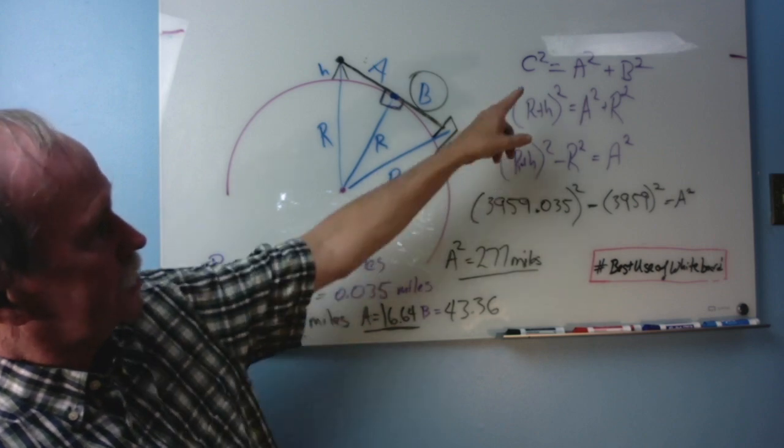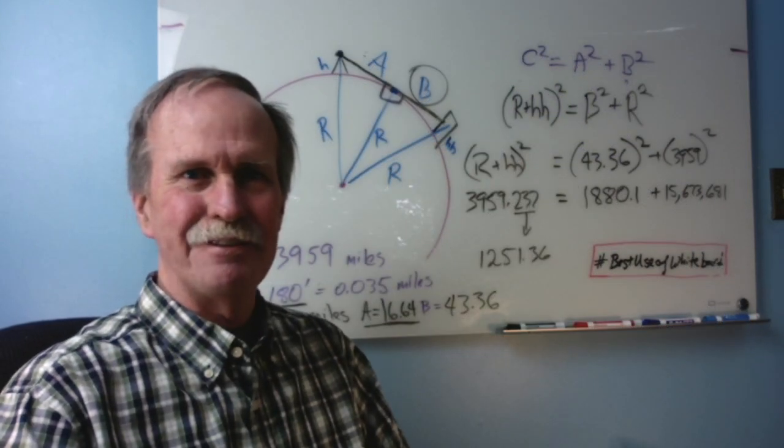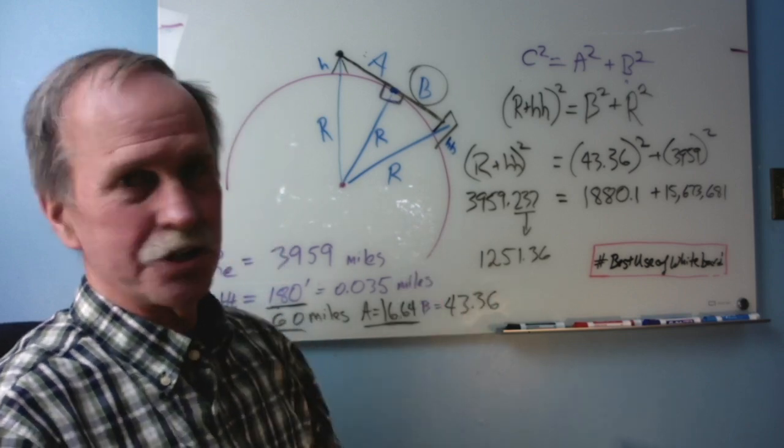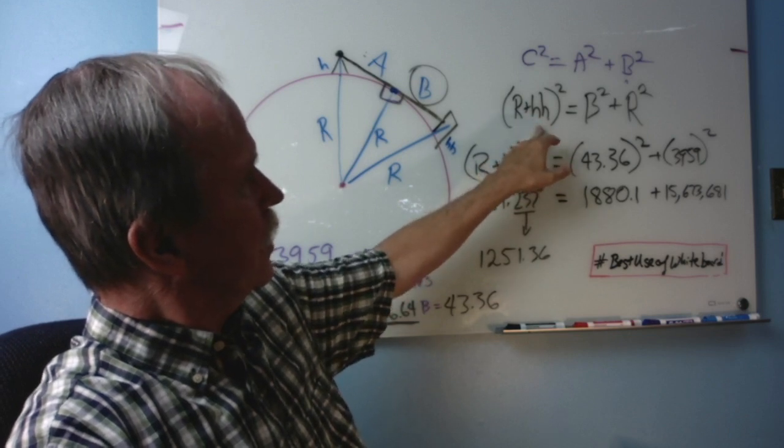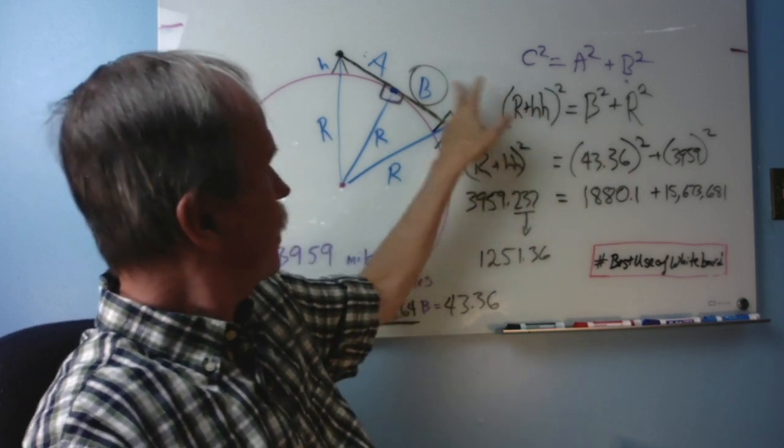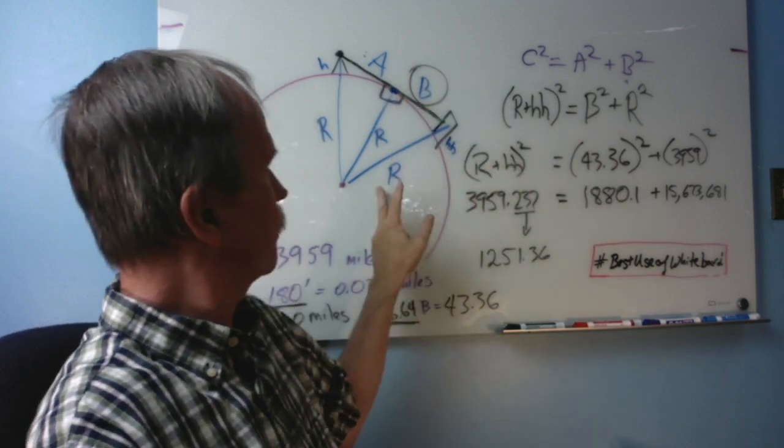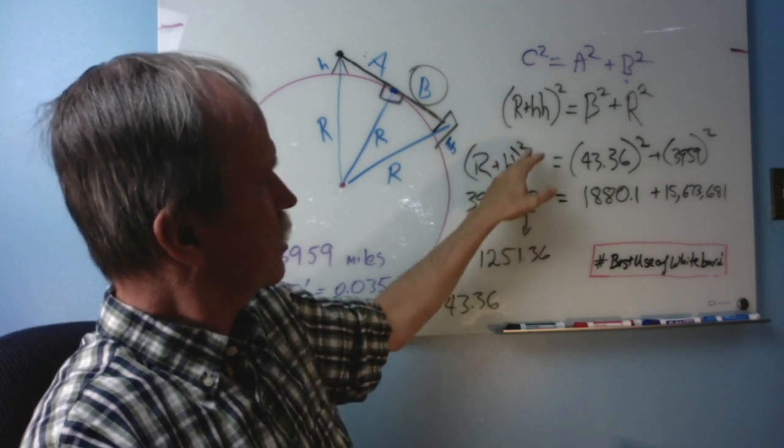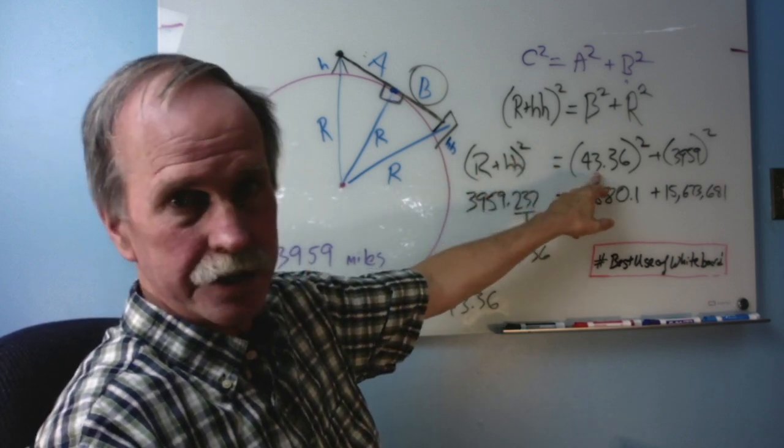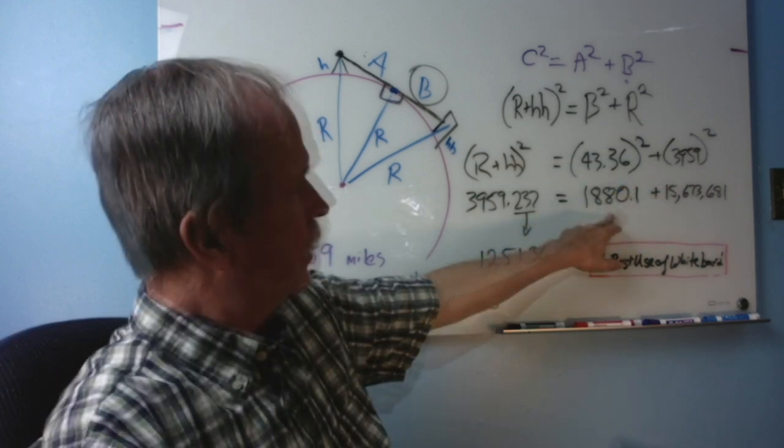So we're going to use a straight version of the Pythagorean theorem for that. All right, now we're having fun. Let's go ahead and put some numbers on this bad boy. Now, recall that the radius of the earth plus the hidden height squared equals B, the distance from the horizon to the building squared, plus the radius of the earth squared. Radius of the earth plus hidden height squared equals 43.36 squared plus 3059 miles squared.